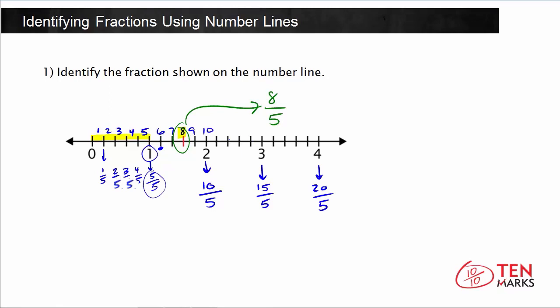Notice that this fraction is greater than 1 and less than 2. You also know it is greater than 1 by comparing the numerator and the denominator. The numerator is 8, and 8 is greater than 5. When the numerator is greater than the denominator, you know you have a fraction greater than 1. You can see this here because the fraction falls between the whole numbers 1 and 2, so it has to represent a value greater than 1.